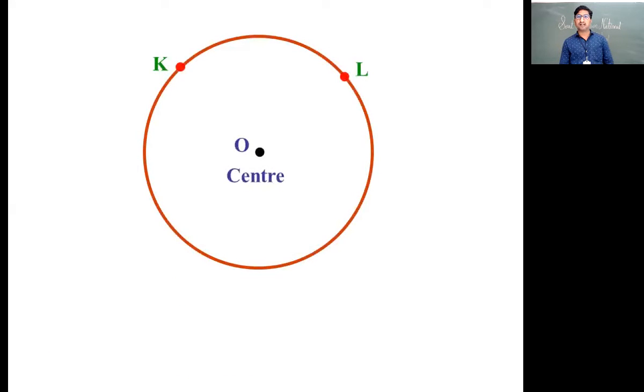How to name the arc? Check this arc - place one point there and name as KXL. If you don't place the X, then it's difficult to find which part you are showing - minor part or major part. So better to name like KXL, and this is the minor arc.